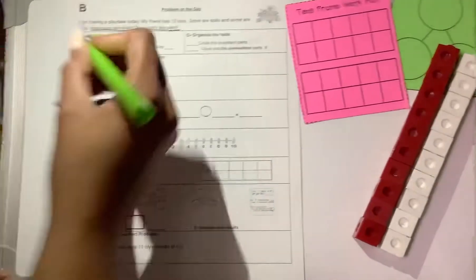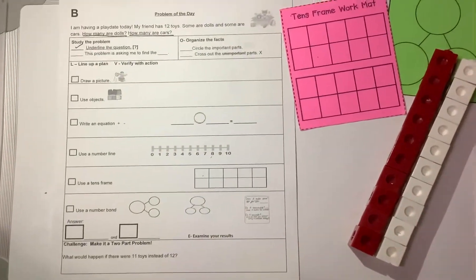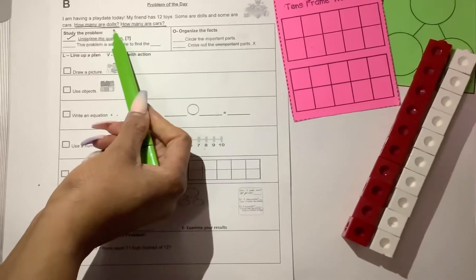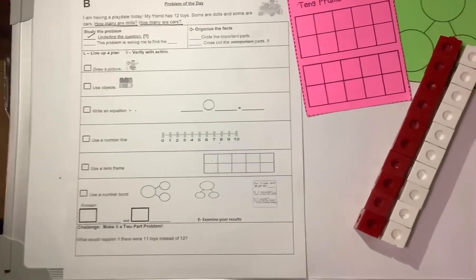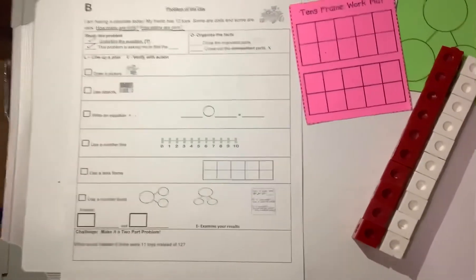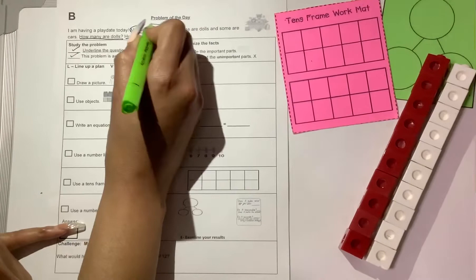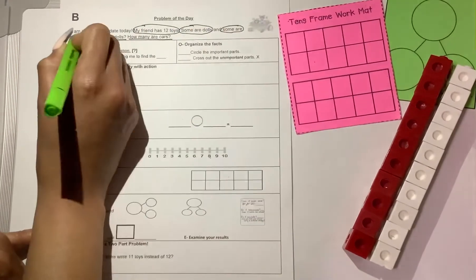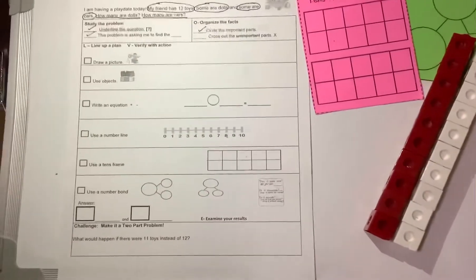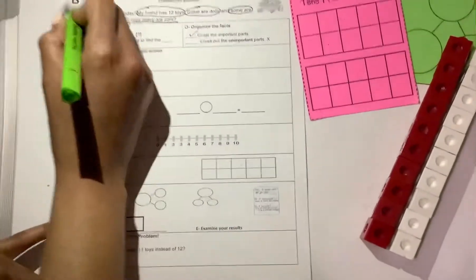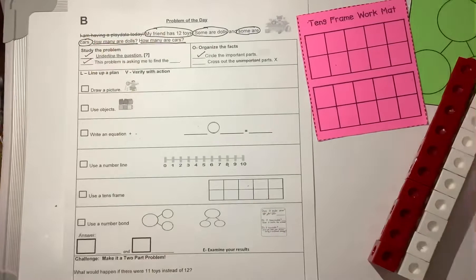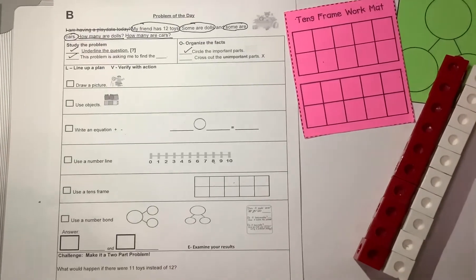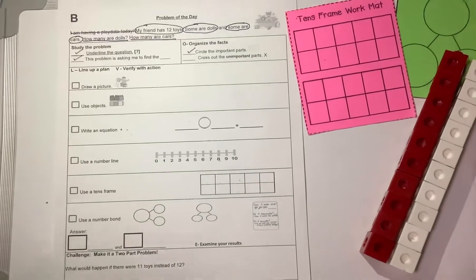Now we need to think about what the problem is asking us to find, and the problem is asking us to find the amount of dolls my friend has and the amount of cars they have. Organize the facts. My friend has 12 toys, some are dolls, and some are cars. Cross out the unimportant parts. I am having a play date. That is not going to help me solve the problem. So boys and girls, I will be using our tools this week for our friends that don't have the option of printing the paper.